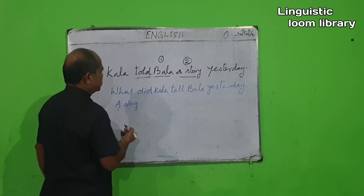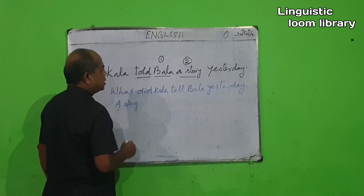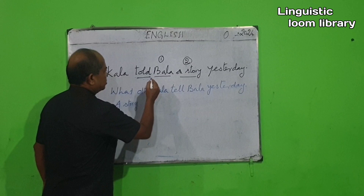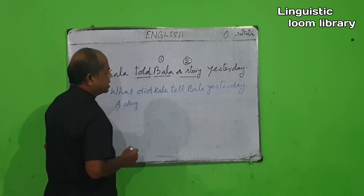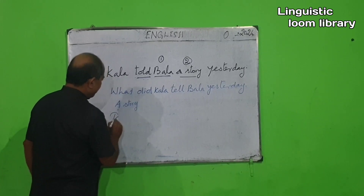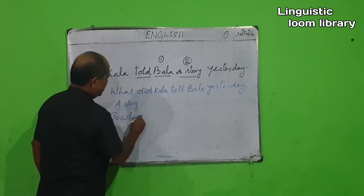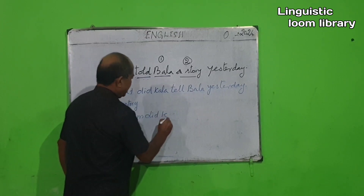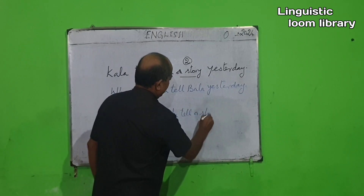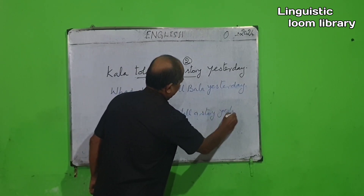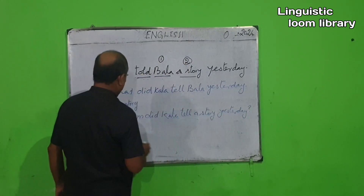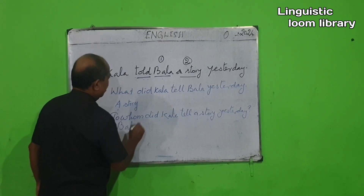Now we are going to find out the indirect object. Find out the finite verb — that is, 'told.' Among the question words to whom, to which, to what, find out the suitable question word. The suitability should be made with the word that comes under number one after the verb — that is, 'Bala.' So we frame the question: To whom did Kala tell a story yesterday? The answer is Bala. So Bala is the indirect object.